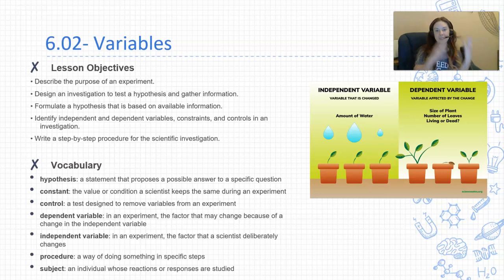Now the dependent and the independent variables. The independent variable is what the scientist is actually changing on purpose. The dependent variable is the factor that might change because you change the independent variable.